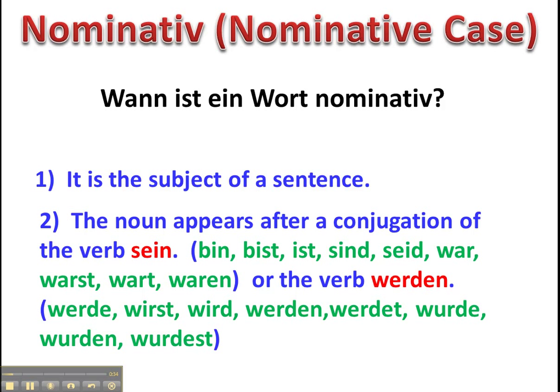Or a conjugation of the verb werden. This could be the present tense conjugations: Werde, wirst, wird, werden, werdet. Or even the past tense conjugations: wurde, wurden, wurdest und wurdet, to name them.